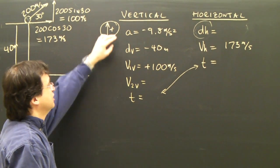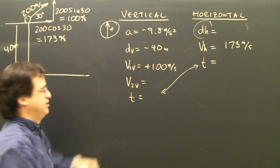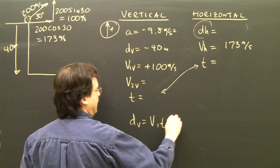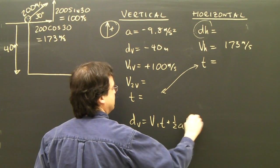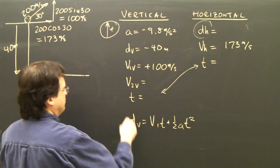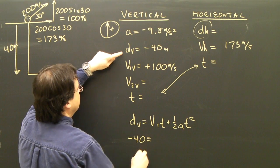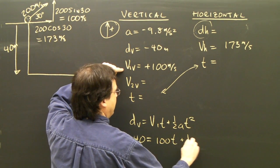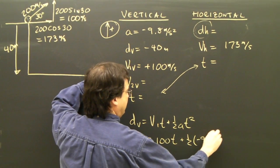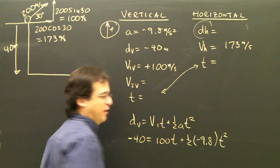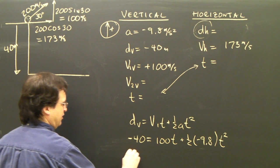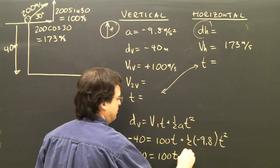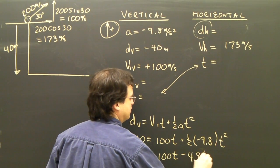What equation am I going to use that has AD and V1, and it's got T? Well, it's this one. D vertical equals V1T plus 1 half AT squared. So I plug my numbers in. Negative 40 equals 100T plus 1 half negative 9.8 T squared. So let me multiply this out here. Negative 40 equals 100T minus 4.9 T squared.